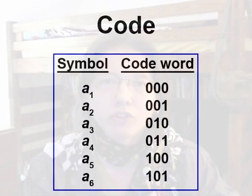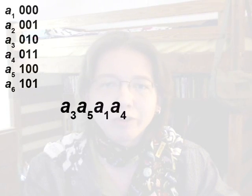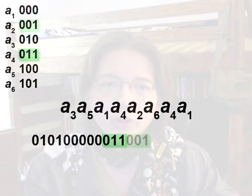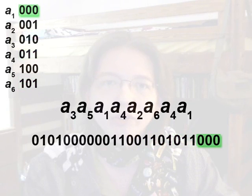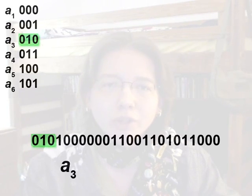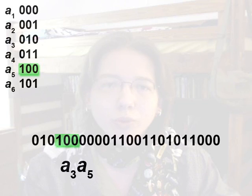An entire set of code words is called a code. So if we had a message that's a series of symbols from a fair die, we can encode that message using each symbol's code word. For a message that contains symbols 3, 5, 1, 4, 2, 6, 4, and 1 in that order, we can replace each symbol with its code word, so the message is represented as a sequence of bits. All these code words are three bits long, so to decode the sequence back into the original message, we read it in blocks of three. The first three bits, 0, 1, 0, is the code word for symbol 3; the next three bits is the code word for symbol 5, and so on.